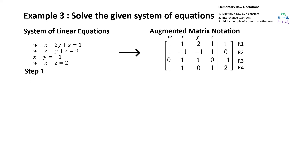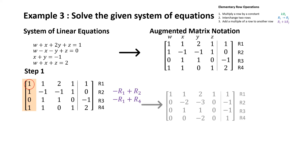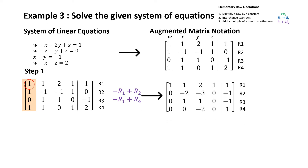First we want to obtain a 1 in the pivot position. We can see there is already a 1 in the pivot position, so we move on to the next step: transforming the matrix to obtain a 0 for every other entry in the column below the leading entry 1, by adding a multiple of a row to another row. This operation leads to the matrix on the right. Next we want to obtain a 1 in the pivot position for row 2.